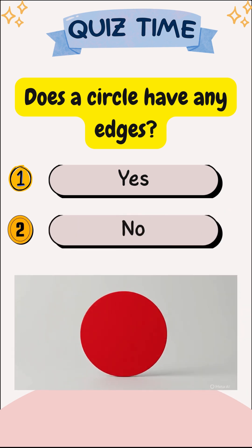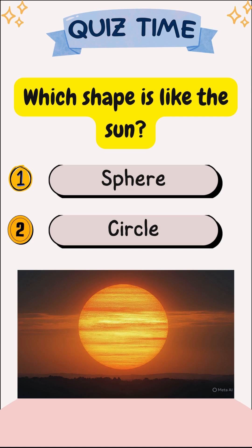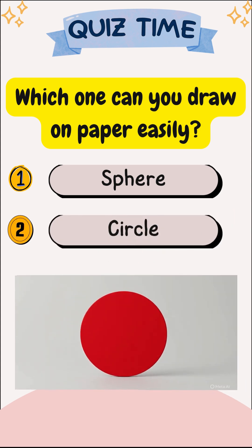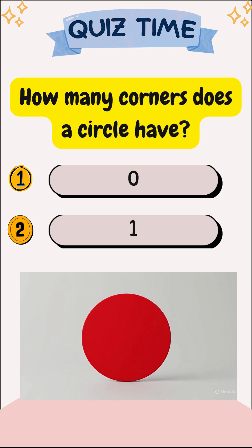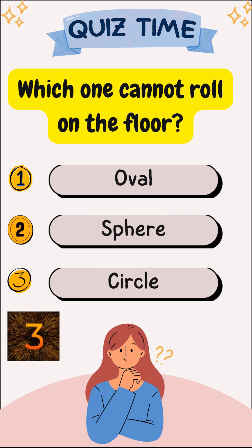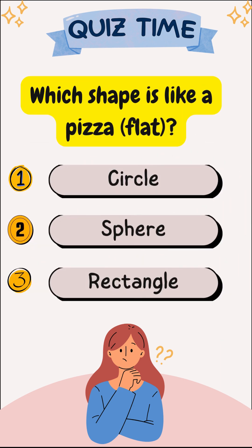Does a circle have any edges? No. Which shape is like the sun? Sphere. Which one can you draw on paper easily? Circle. How many corners does a circle have? Zero. Which one cannot roll on the floor? Circle. Which shape is like a pizza or flat? Circle.